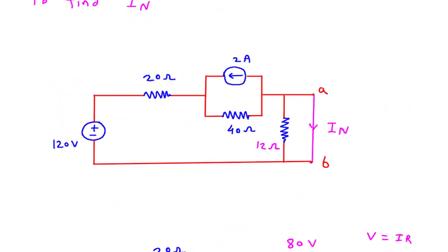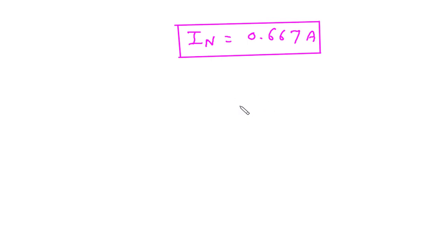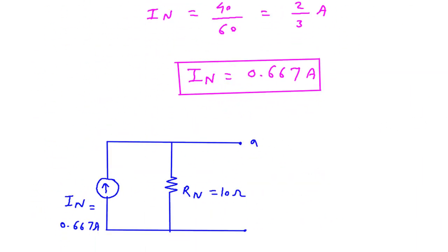Now we have the value of RN and IN. From this we can draw Norton's equivalent circuit. So Norton's equivalent circuit will be a current source IN and Norton's resistance in parallel with Norton's current. RN is equal to 10 Ohm and IN is equal to 0.667 Ampere. This is terminal A and this is terminal B.